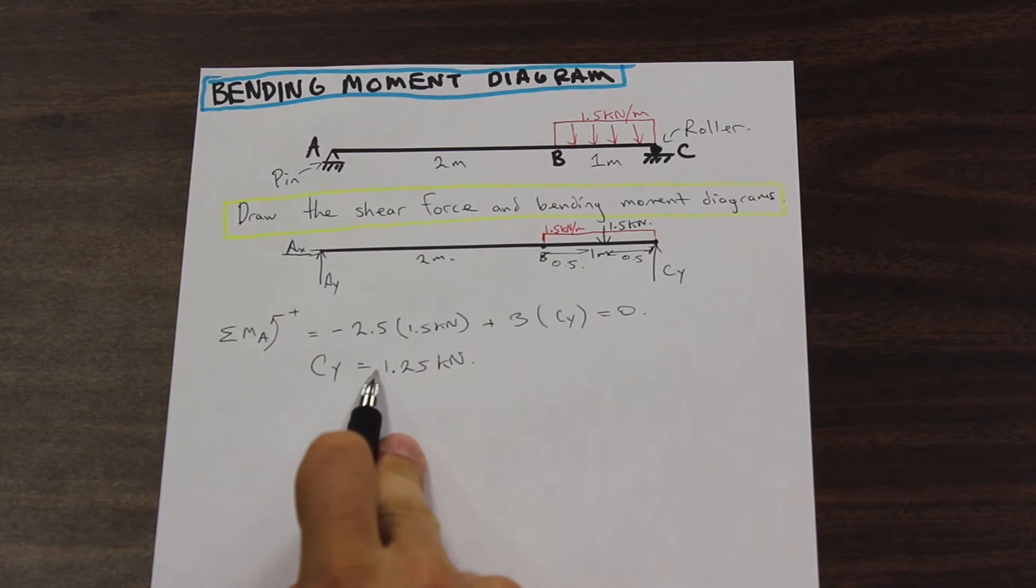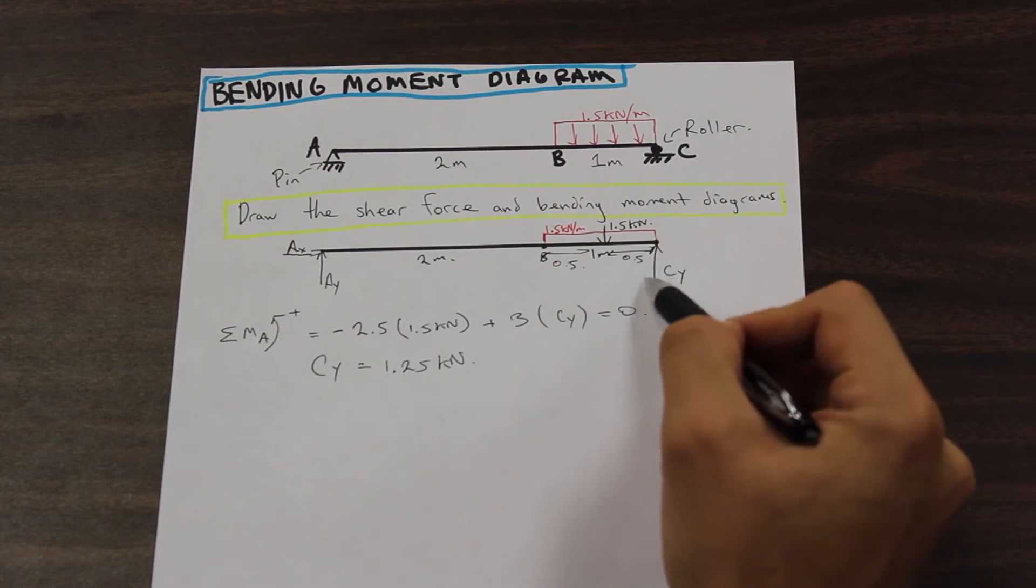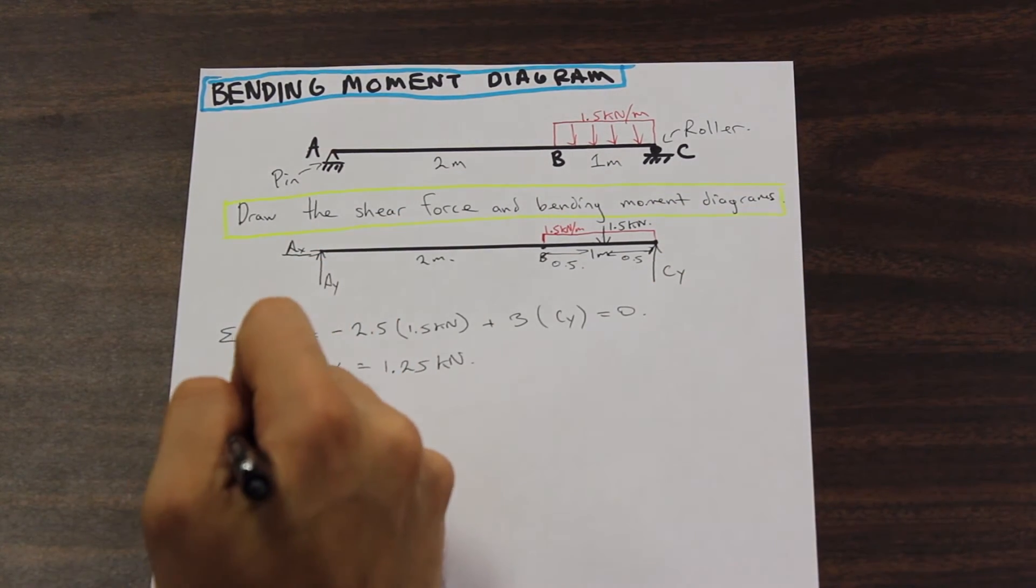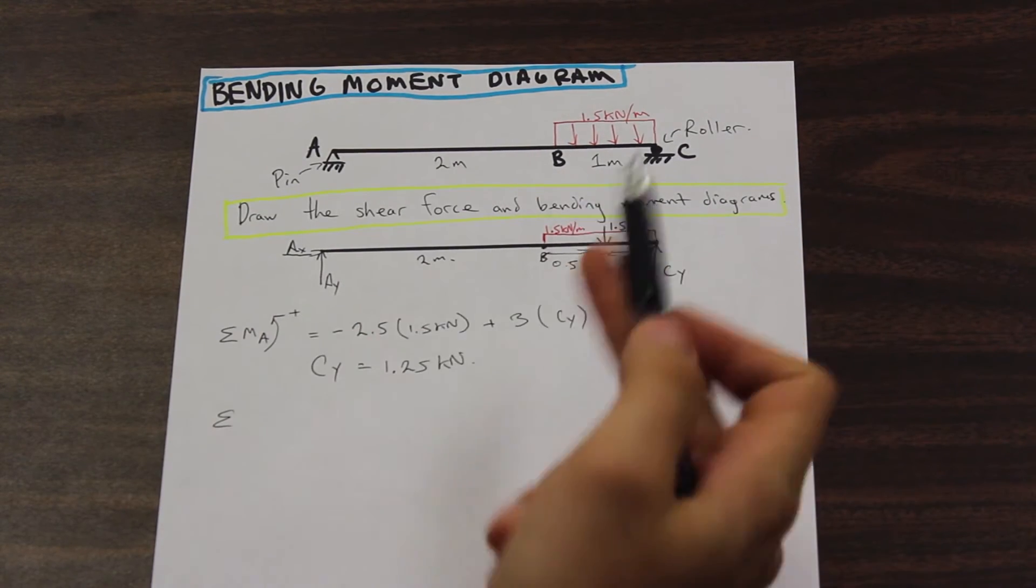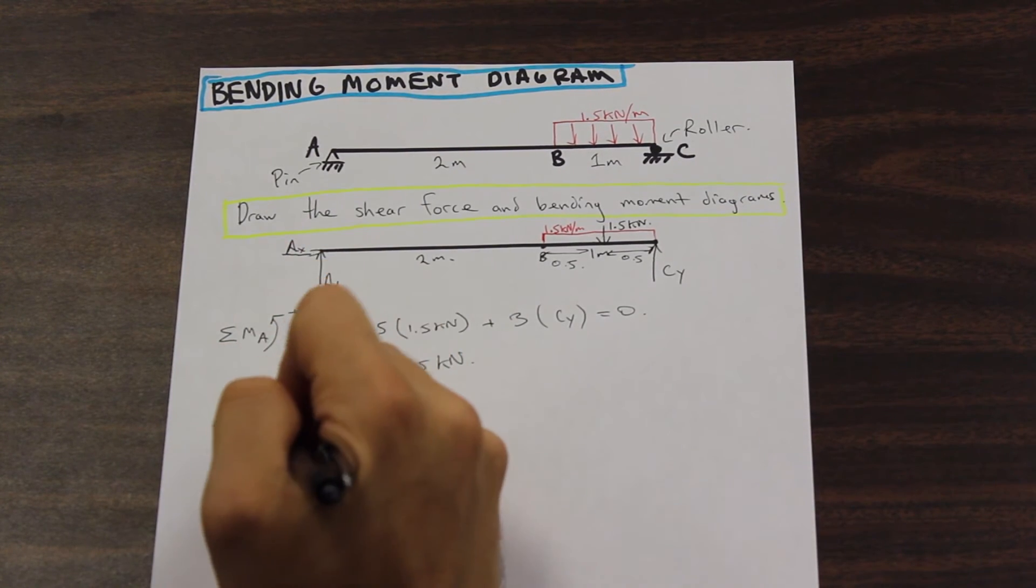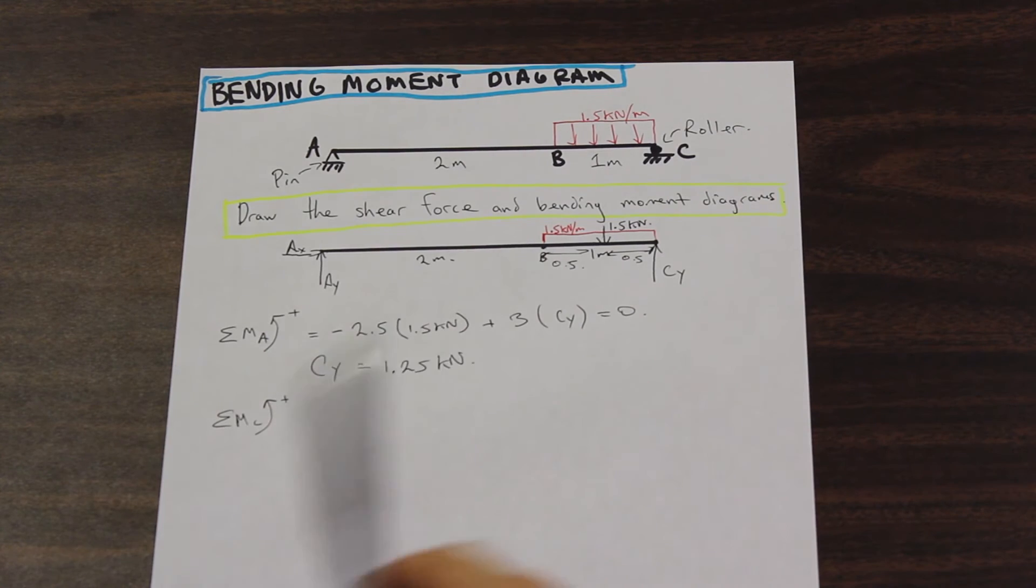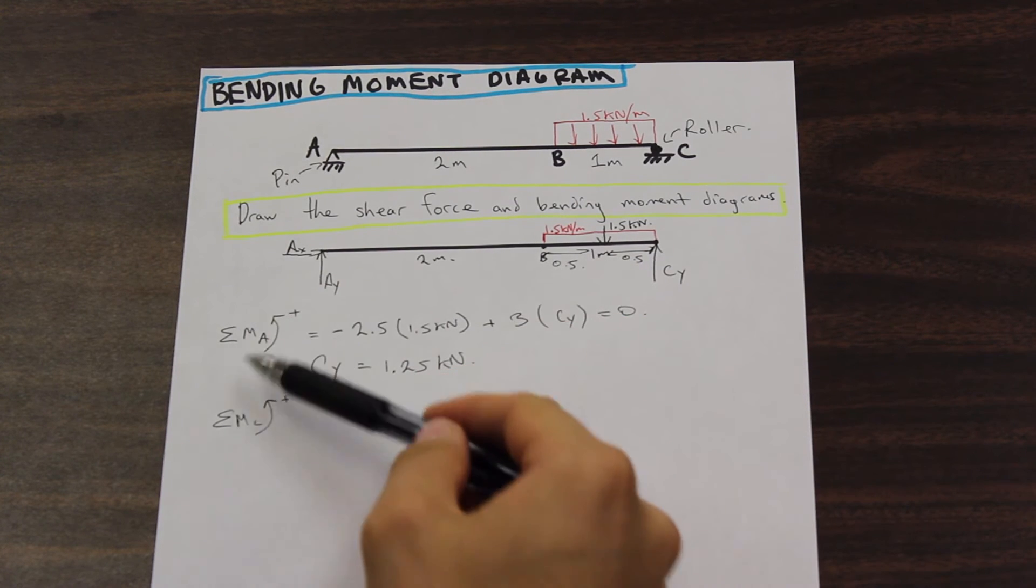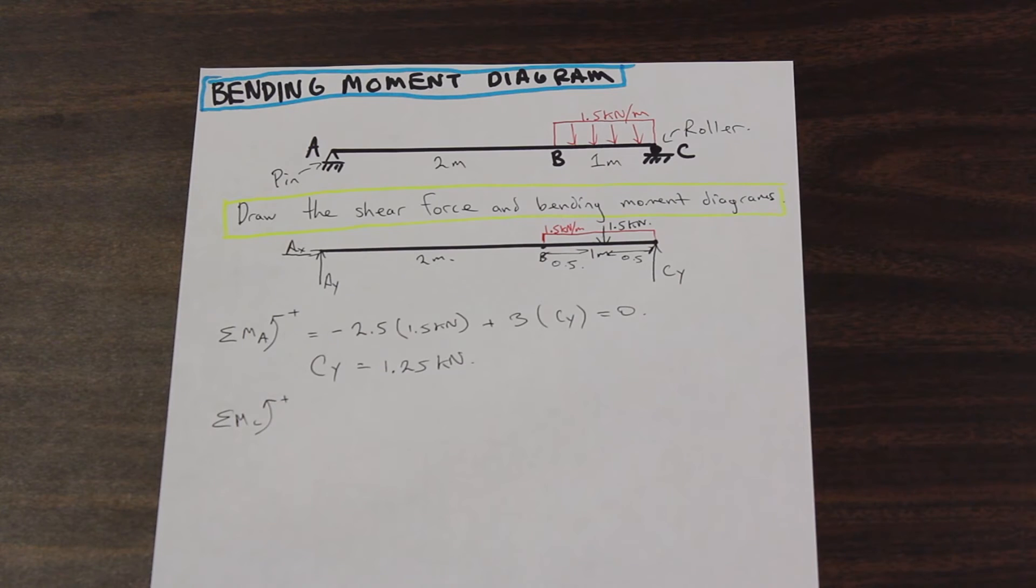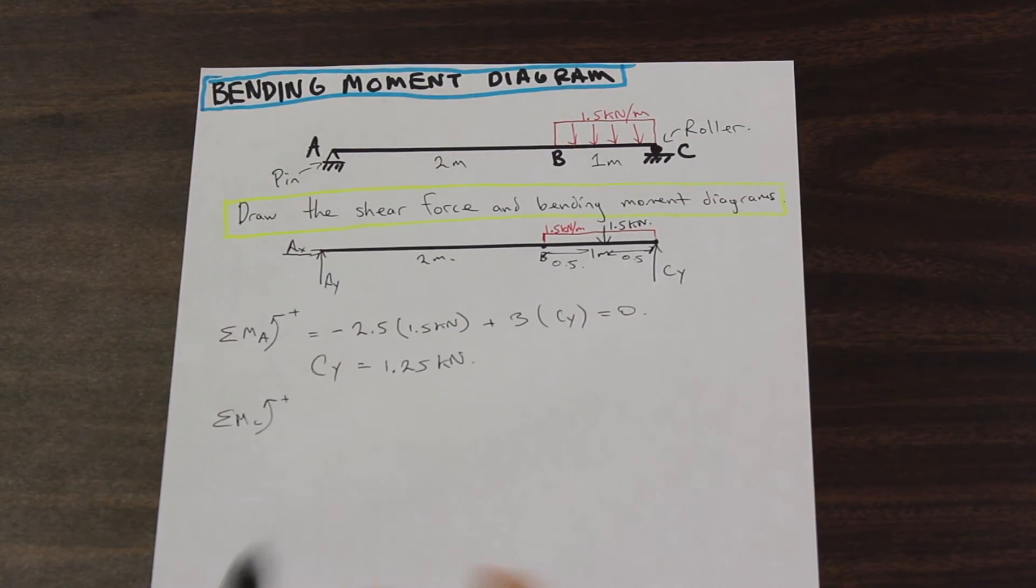And because we didn't get a negative for CY, the direction that we assumed it to be in when we drew our free body diagram is correct. So it is acting upwards. So let's find the reaction at A. I know that a lot of people will tell you to now, at this point, take the summation of the forces in the Y and just isolate for A. And I don't suggest that, because by taking both moments like this, it takes maybe a minute longer, but there's a check at the end. So there's a chance to check our reactions and make sure that they're right. Because if we solve the reactions incorrectly, then everything past this point will be wrong. So this step is extremely important.